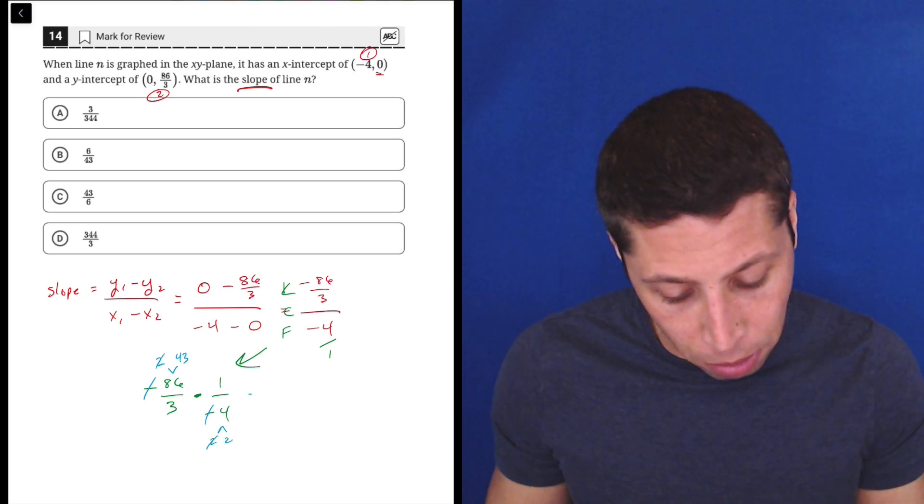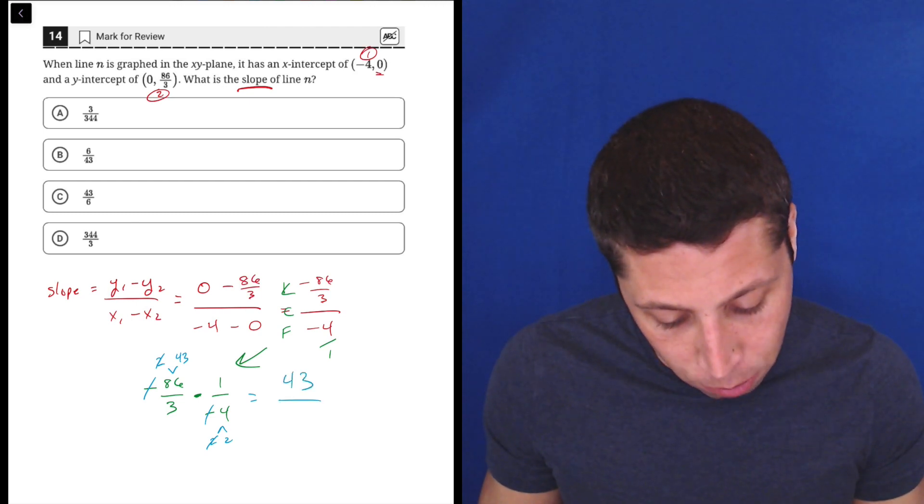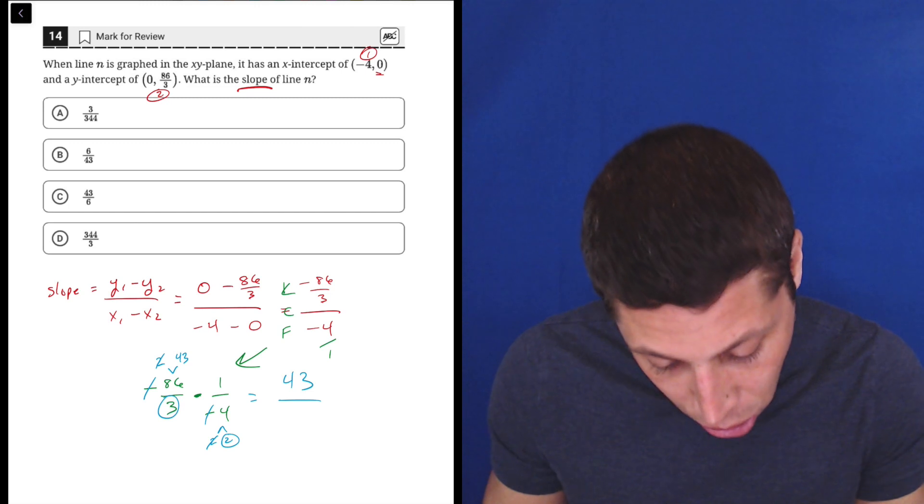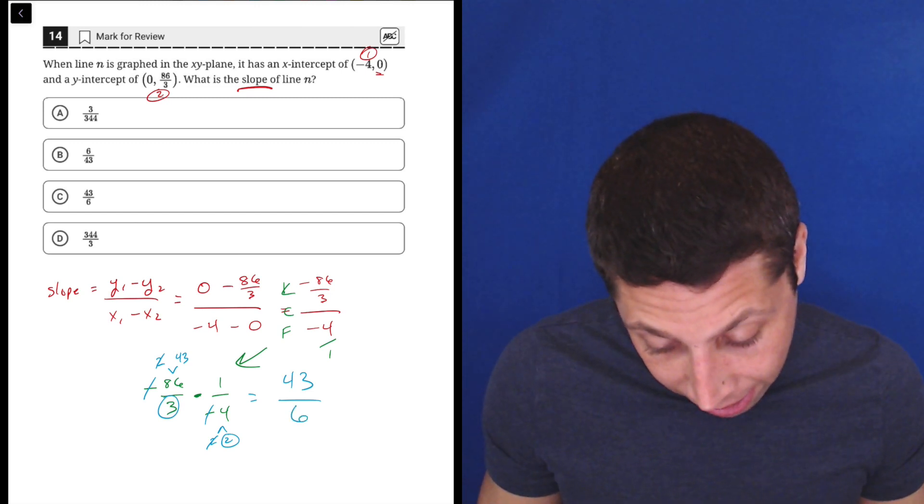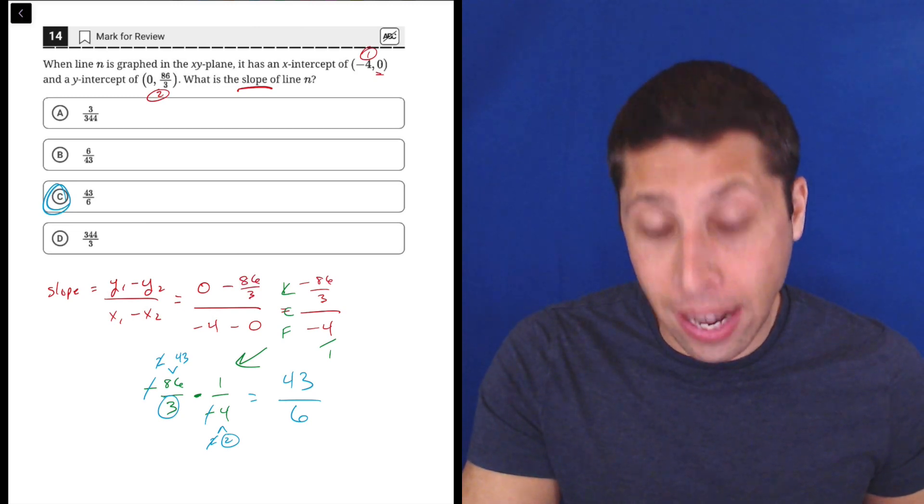And now I do have a bunch of prime numbers. So now I can just do the multiplication. 43 times 1 on the top, and then 3 times 2, 3 times 2 on the bottom is 6. So 43 over 6 should be the slope choice C. And that is the answer.